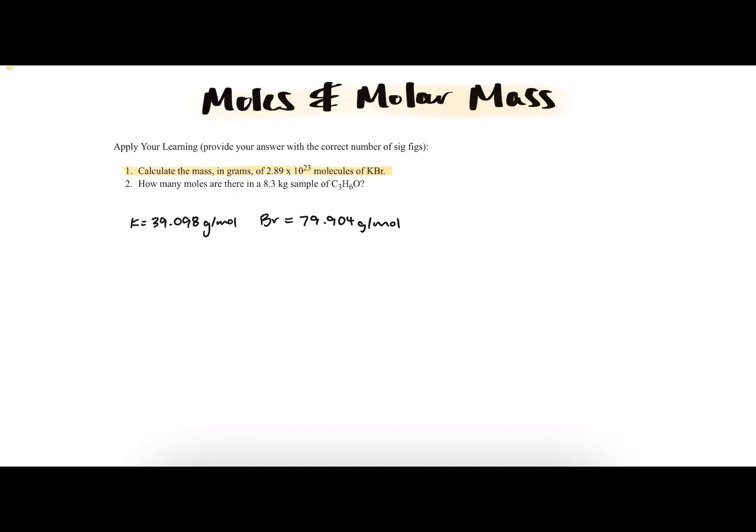Hi everyone, in this video I'll be going over apply your learning question number one from the moles and molar mass unit. Question number one asks us to calculate the mass in grams of 2.89 times 10 to the 23 molecules of potassium bromide.